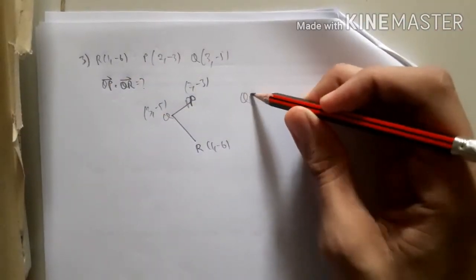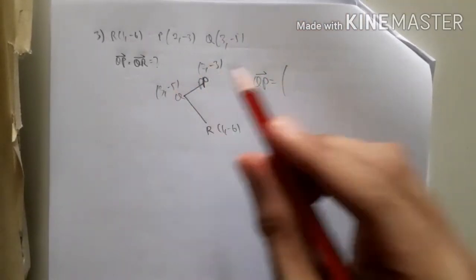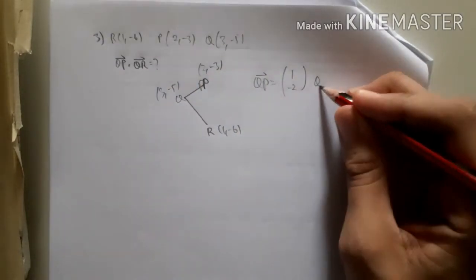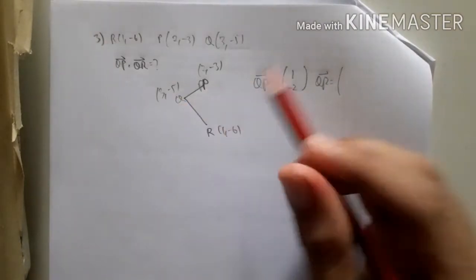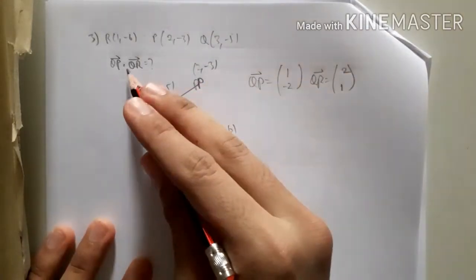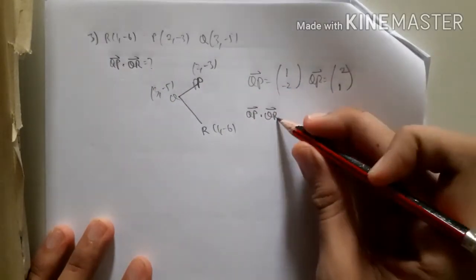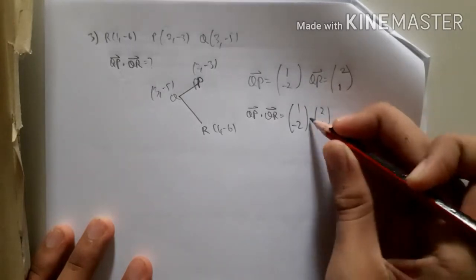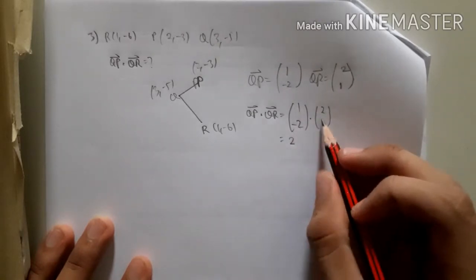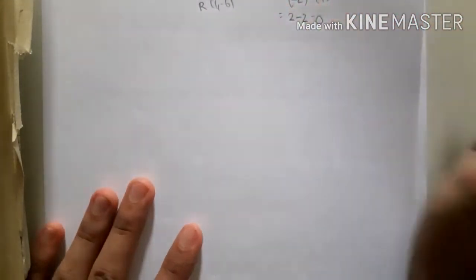To find the scalar product, we first form the vectors. Vector QP = P - Q = (2-3, -3-(-5)) = (-1, 2). Vector QR = R - Q = (1-3, -6-(-5)) = (-2, 1). The scalar product is (-1)(-2) + (2)(1) = 2 - 2 = 0. So the scalar product of QP and QR is zero.